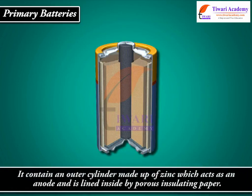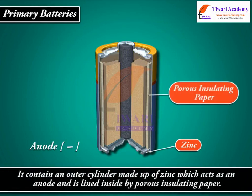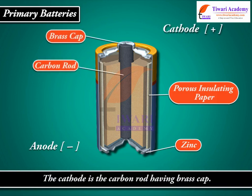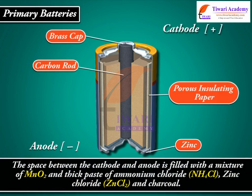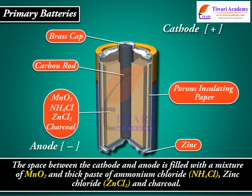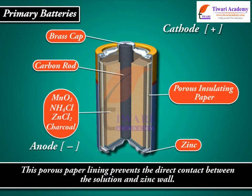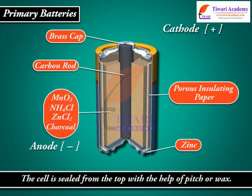Dry cell is a compact form of the Leclanché cell. It contains an outer cylinder made up of zinc which acts as an anode and is lined inside by porous insulating paper. The cathode is a carbon rod having a brass cap. The space between the cathode and anode is filled with a mixture of MnO₂ and a thick paste of ammonium chloride (NH₄Cl), ZnCl₂, and charcoal. This porous paper lining prevents direct contact between the solution and the zinc wall.